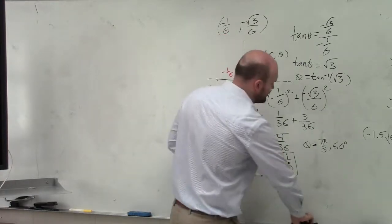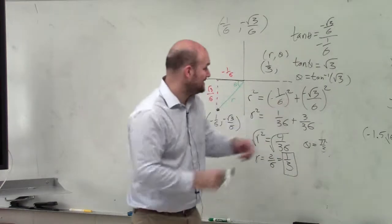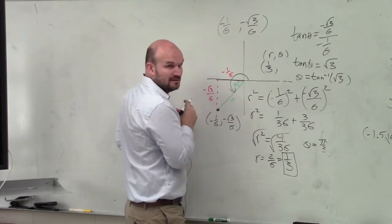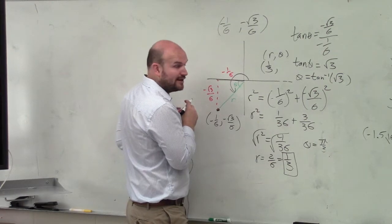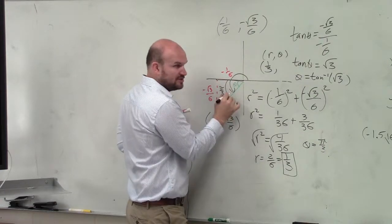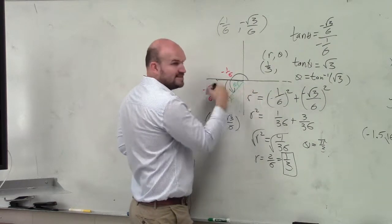Now, think about this, though. Is this angle pi over 3? That angle pi over 3? No. This is pi over 3. So what is the angle, then, in standard position? Because remember, inverse tangent only gives you first and second quadrant. So what is this angle?